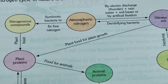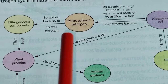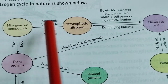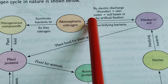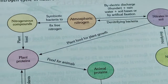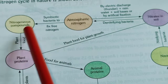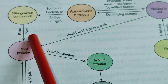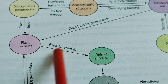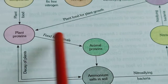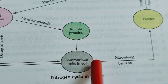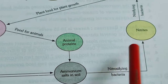Atmospheric nitrogen is cycled in nature in two ways: either by symbiotic bacteria or by electric discharge. By symbiotic bacteria, nitrogen is fixed to nitrogenous compounds, then absorbed by plants to form plant protein. Plant protein is converted into animal protein when consumed by animals. After death and decay, they convert into ammonium salts in the soil. These ammonium salts are converted to nitrates by nitrifying bacteria.